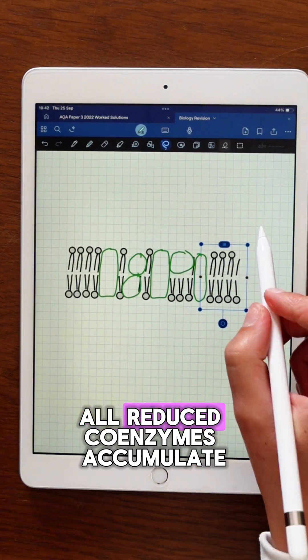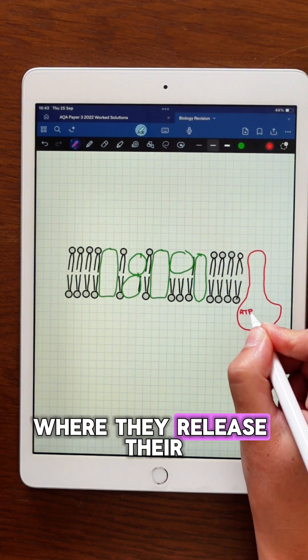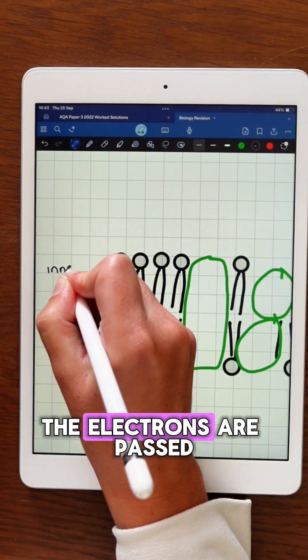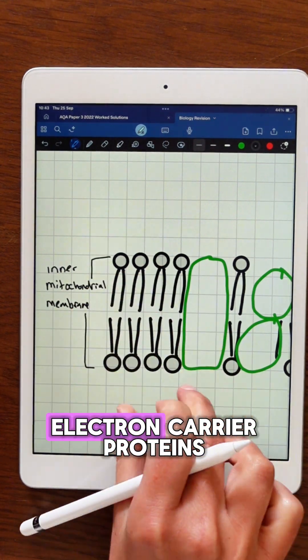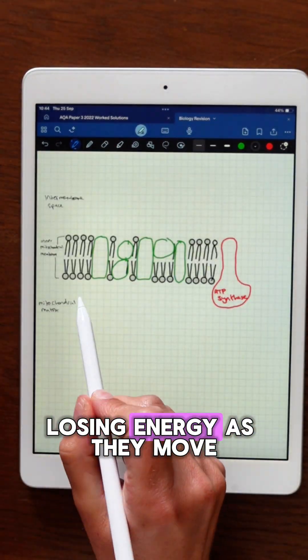In this stage, all reduced coenzymes accumulate in the mitochondrial matrix where they release their protons and electrons. The electrons are passed down a series of electron carrier proteins embedded in the inner mitochondrial membrane, losing energy as they move.